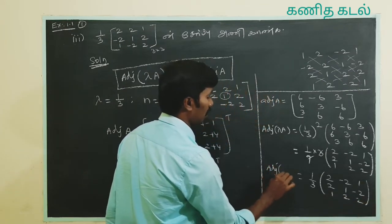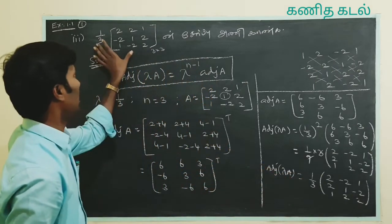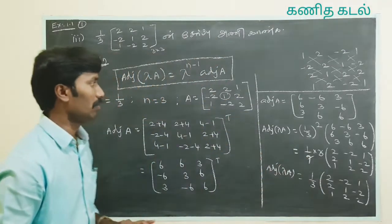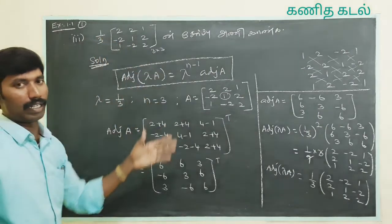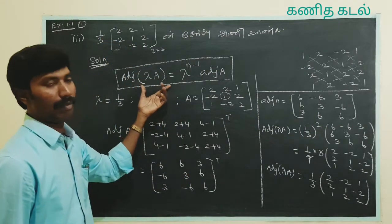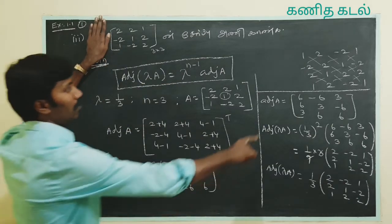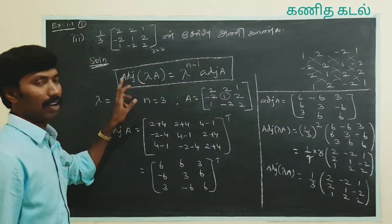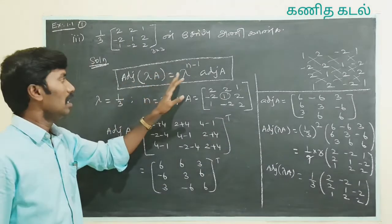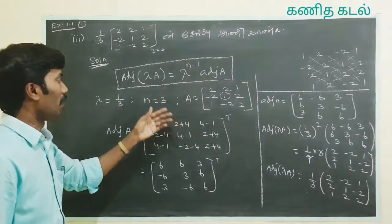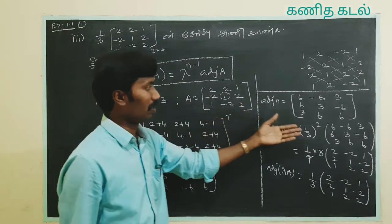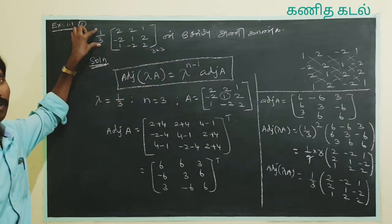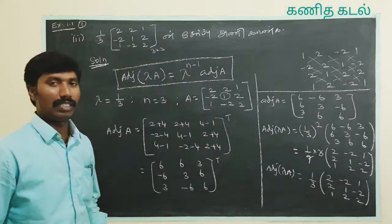This is the adjoint of lambda A. We can substitute lambda A and the final answer is 1 by 9 times the adjoint A matrix. So we can use this formula as a matrix solution. We can do the same thing — this is a creative part and it's easy to solve.